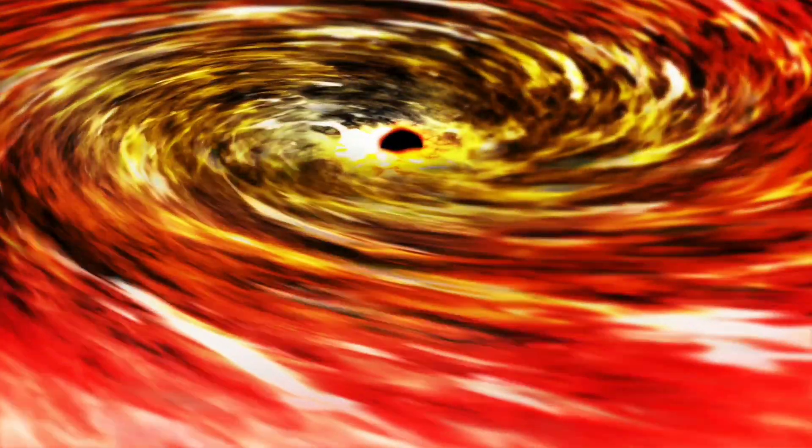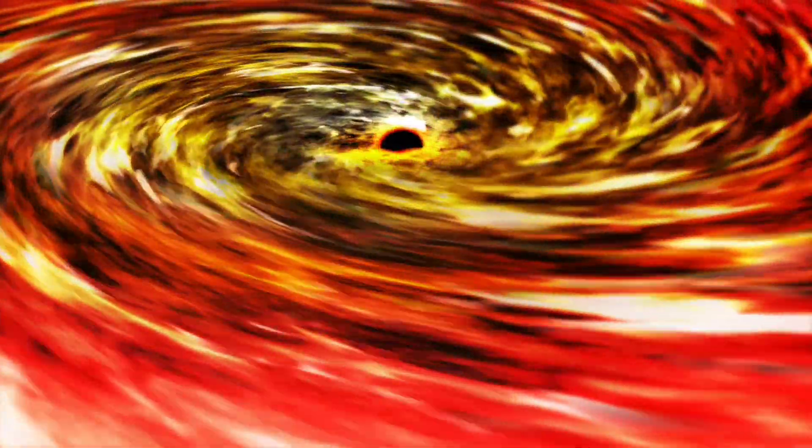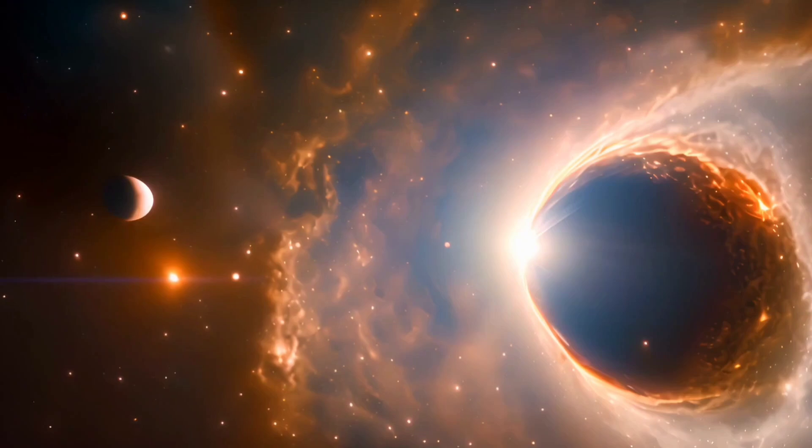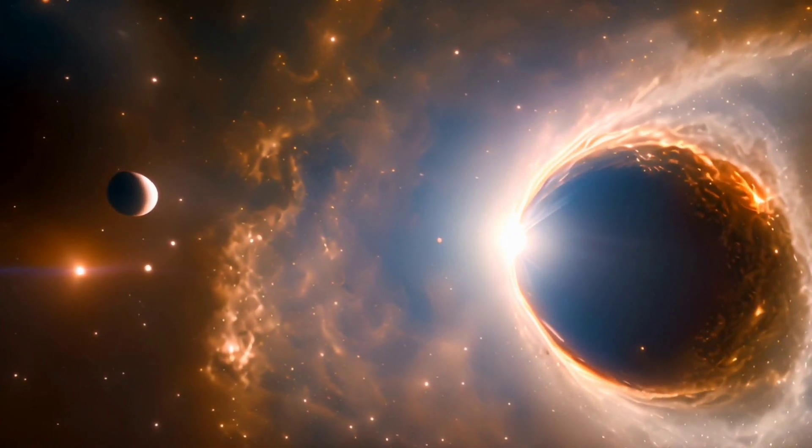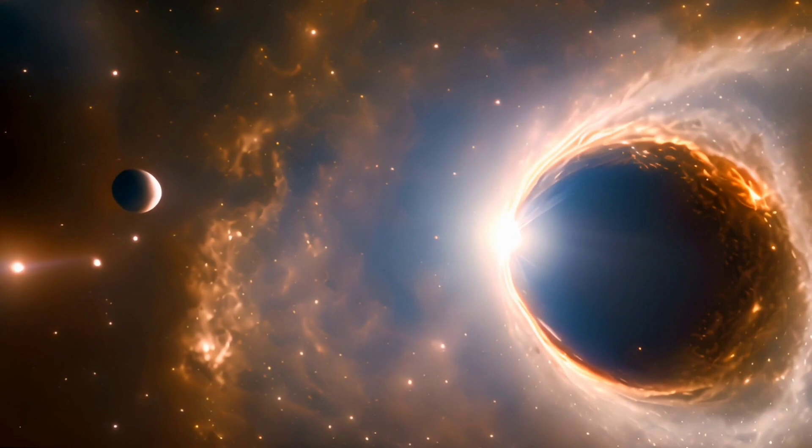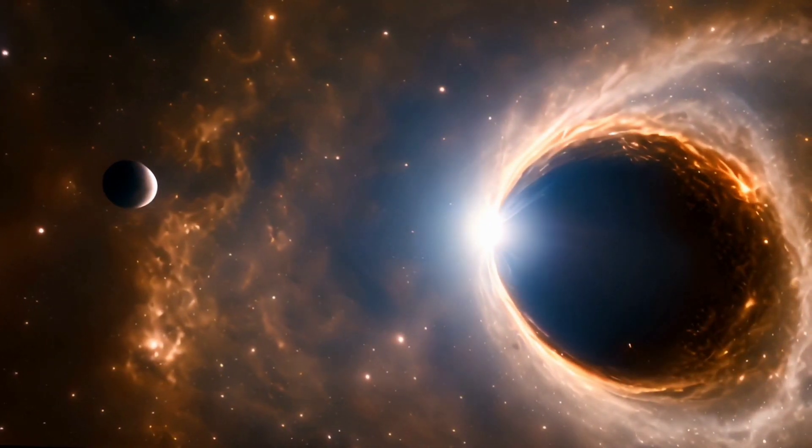But how do such powerful winds form? Black holes grow by consuming the matter around them. This process releases an immense amount of energy, which propels matter outward at nearly the speed of light. The black hole in J1007-2115 operates similarly. However, the winds from this black hole are so powerful that they can impact the entire galaxy.